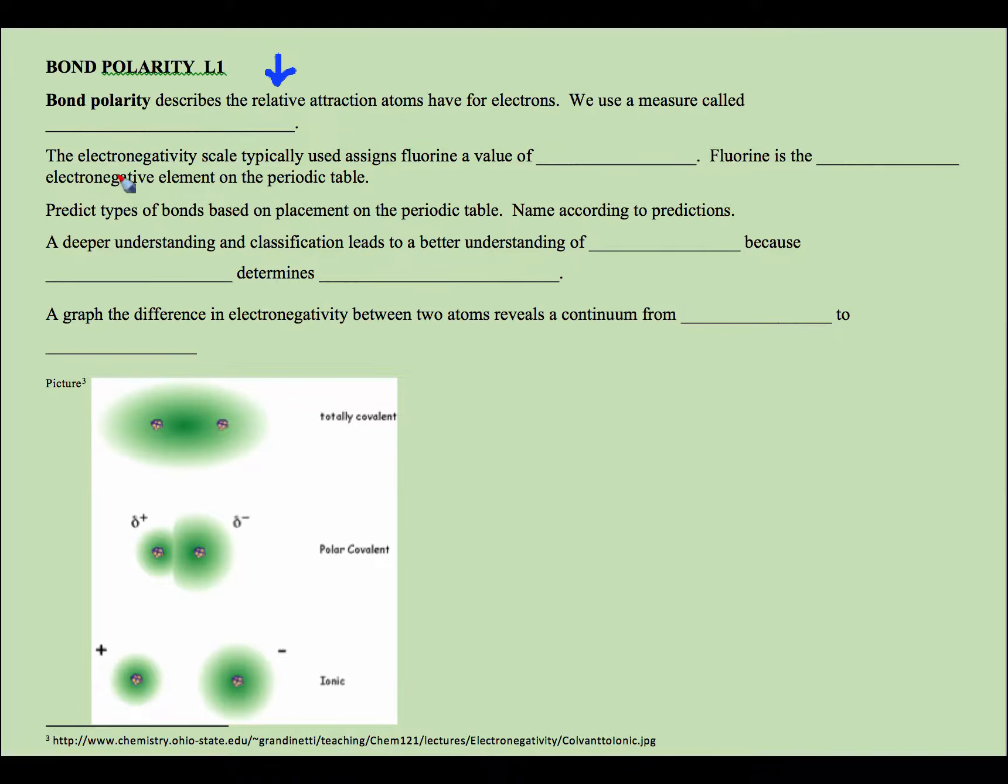We use a measure called electronegativity. So if we have two atoms A and B, electronegativity is the relative attraction one atom has over another atom for the bonded electrons.